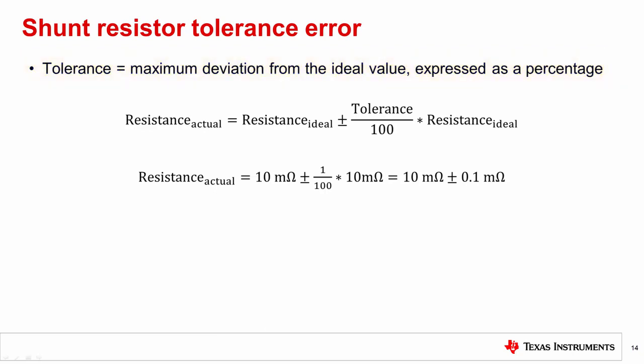The actual resistance can vary by the tolerance amount in both the positive or negative direction. For example, a 10 milliohm 1% tolerance shunt resistor can measure 10 milliohms plus or minus 0.1 milliohms. That is, it can vary from 9.9 milliohms to 10.1 milliohms.